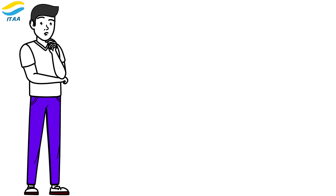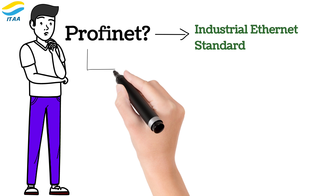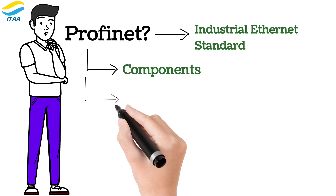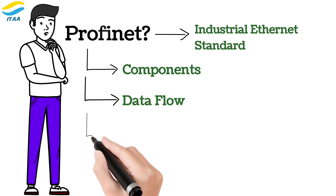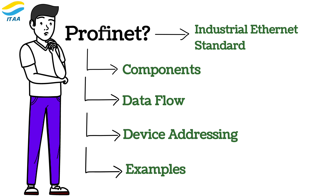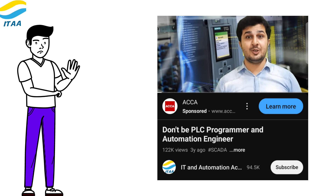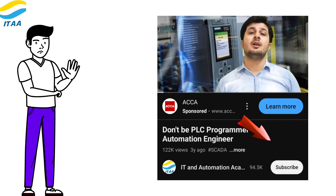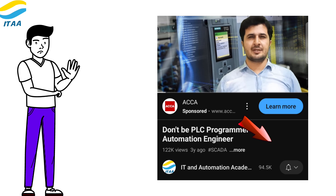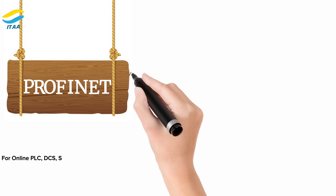In today's video, we will cover what is PROFINET, a leading industrial Ethernet standard. You'll learn about its key components, how data flows through a PROFINET network, device addressing, and real-world examples of how PROFINET is used in industries to make processes smarter and more efficient. If you're passionate about industrial automation and want to stay updated with the latest tips and guides, make sure to subscribe to our channel and hit that notification bell. Now let's discuss what PROFINET is all about.